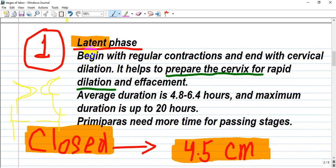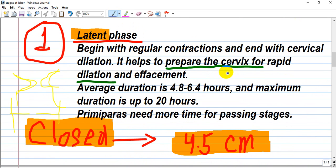First stage has two parts: latent phase and active phase. The latent phase prepares the cervix for rapid dilation and effacement. It begins with regular contractions. Average duration is 4 to 6 hours, maximum up to 20 hours. Primiparas